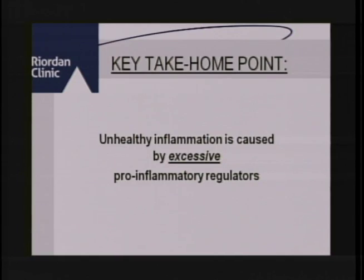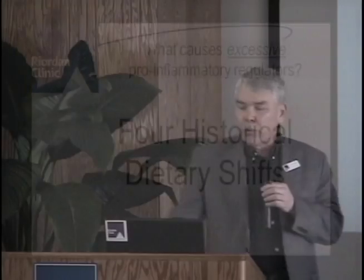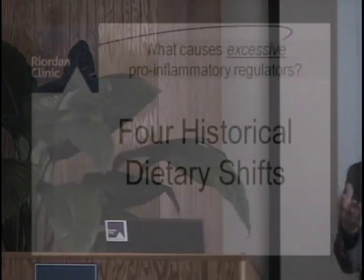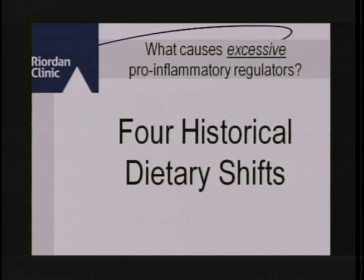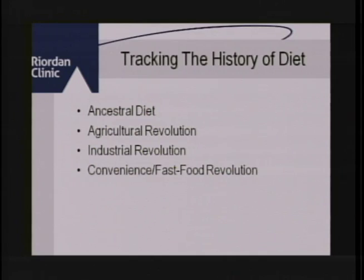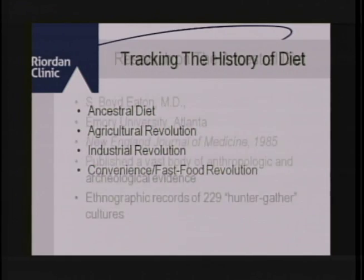Unhealthy inflammation is caused by an excess of pro-inflammatory regulators, and this happens mostly because of what's happened to our diets. I'm going to show you how historically things have changed a lot in the way we eat. The four epochs of diet I'll discuss are our ancestral diet, the agricultural revolution, the industrial revolution, and now the age of convenience and fast foods.